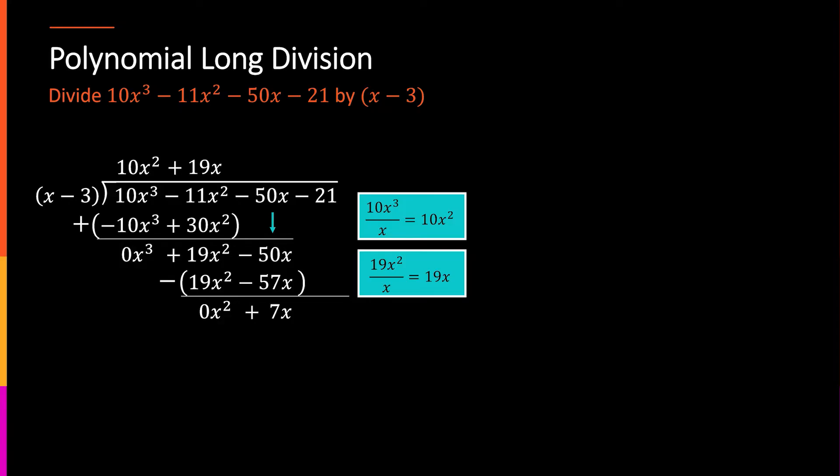then this next piece, negative 50 minus minus 57, and I'm going to get a positive 7x, drop the next term, do it again. So, looking at this 7x divided by x, that gets me 7, that's what goes up top,